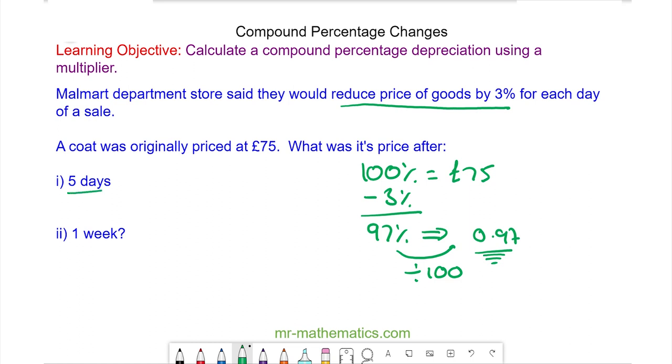To work out the price after 5 days we have the multiplier 0.97 raised to the power of 5 times by the original £75 and this is £64.41.